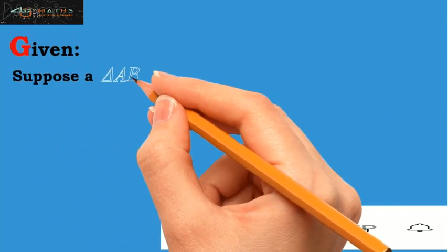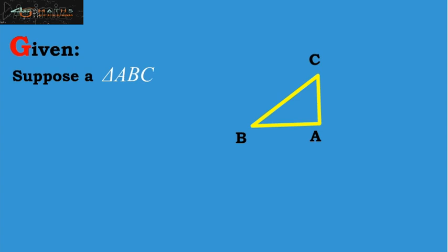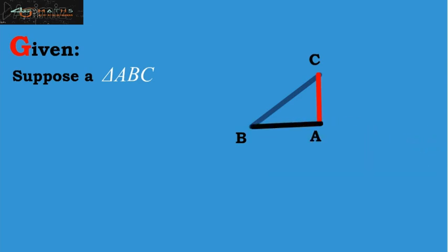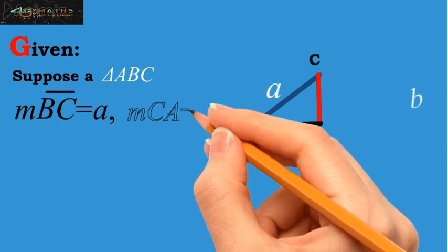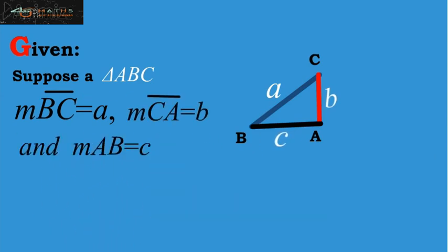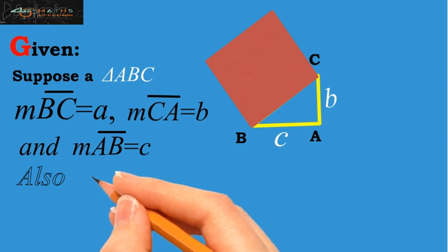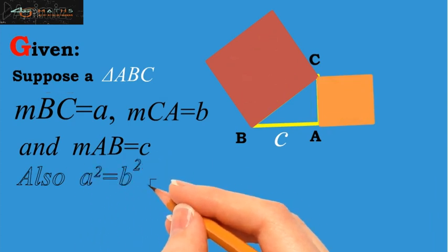Suppose we have given a triangle ABC, in which the measure of the sides BC, CA and AB are respectively A, B and C. Also, A square is equal to B square plus C square.